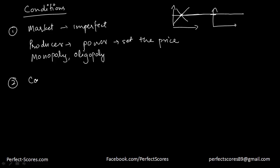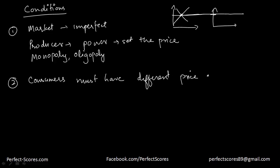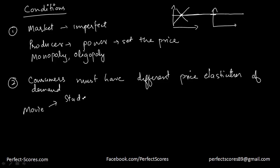The second condition is that the consumers must have different price elasticities of demand. For example, with movie tickets there are two types of consumers: students and adults.